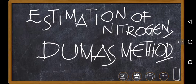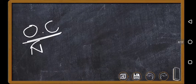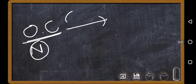Duma method is one very simple method in which organic compound which contains nitrogen is taken and is heated with copper oxide, CuO.